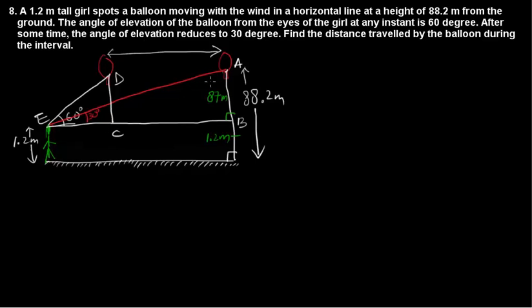In triangle ABE, opposite divided by adjacent equals tan. The angle is 30 degrees, so tan 30° = 1/√3 = 87/EB. Cross multiply and EB equals 87√3 meters.